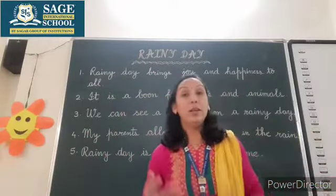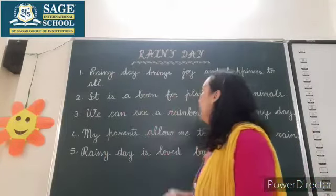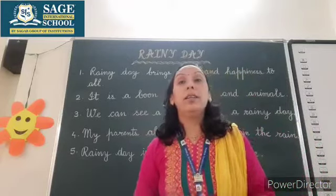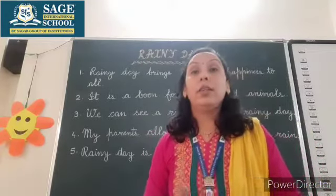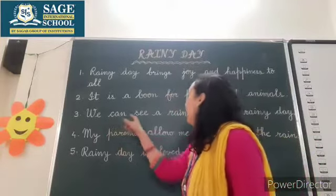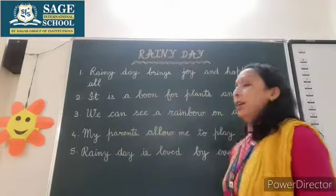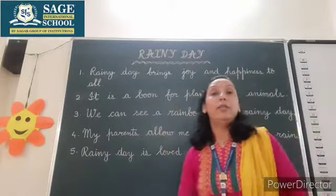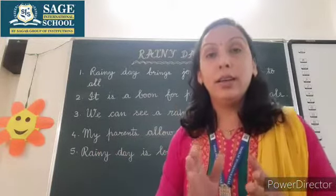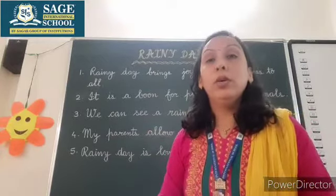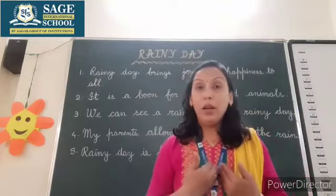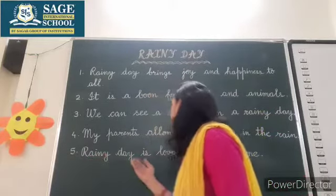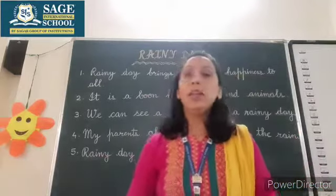So what we have written: first, 'Rainy day brings joy and happiness to all' — it really does. Second, 'It is a boon for plants and animals' — after hot summer days, plants and animals get water and are able to grow. Third, 'We can see a rainbow on a rainy day.' Fourth, 'My parents allow me to play in the rain.' And for the last sentence, we write a concluding line.